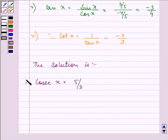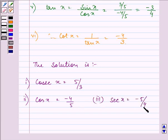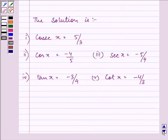So the solution is: cos x is minus 4 by 5, sec x is minus 5 by 4, tan x is minus 3 by 4, and cot x is minus 4 by 3.